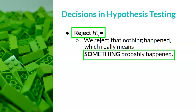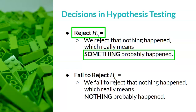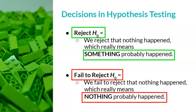The words in the green box summarize what reject the null hypothesis really means. I want you to think of a stoplight where green means go. I use the color green because something probably happened. In other words, reject the null hypothesis means that something probably happened, or that the research study probably worked. Now, the second possible decision is to fail to reject the null hypothesis. In this decision, we failed to reject that nothing happened — we failed to find evidence that something happened — so it really means nothing probably happened. The words in the red box summarize what fail to reject the null hypothesis really means.